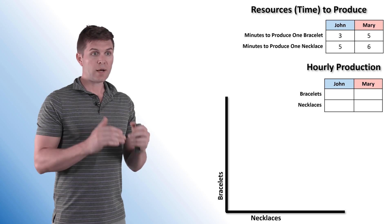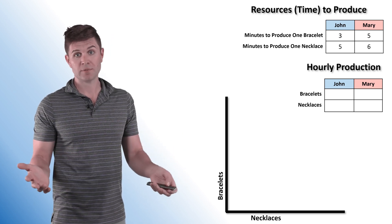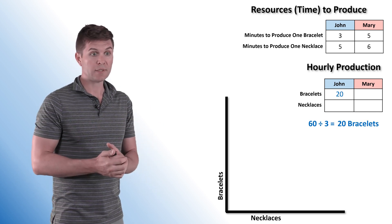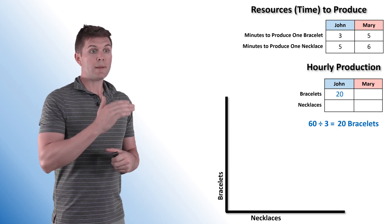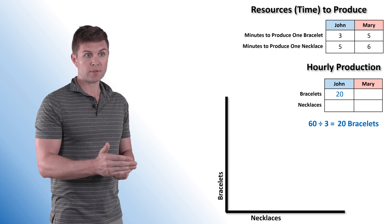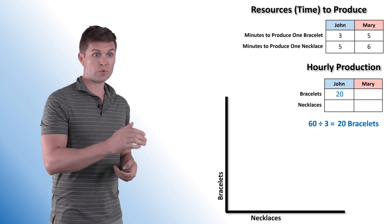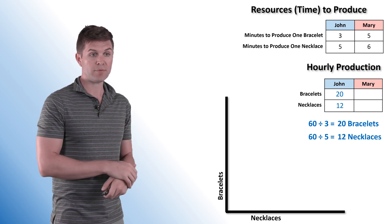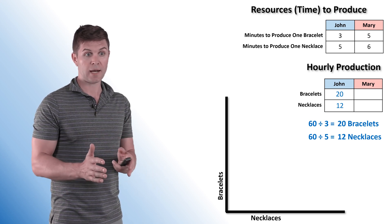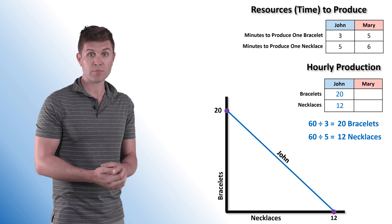Let's figure out how much we need to produce. When it gives you minutes, we know there are 60 minutes in an hour, so we can figure out hourly production fairly easily. 60 divided by 3 — it takes him three minutes to produce one bracelet — so he can do 20 bracelets in an hour. For necklaces, 60 divided by 5 — it takes him five minutes — so he can do 12 necklaces in an hour. Now we can easily throw that on the graph.